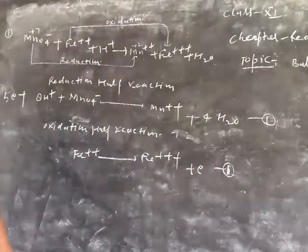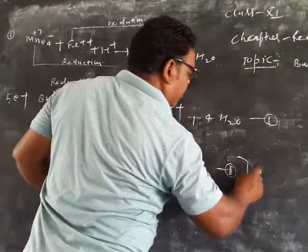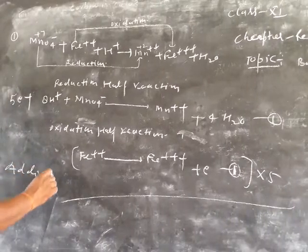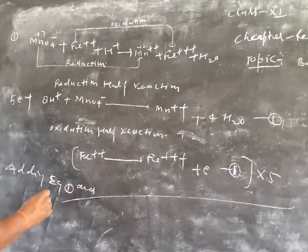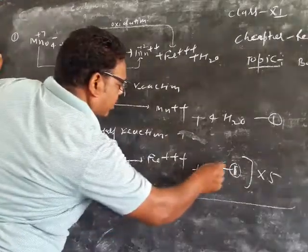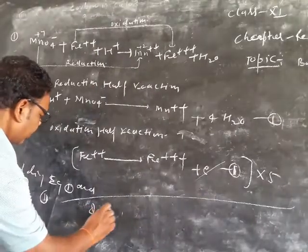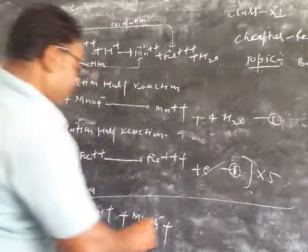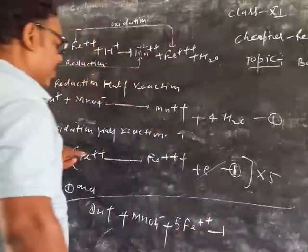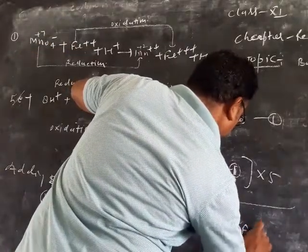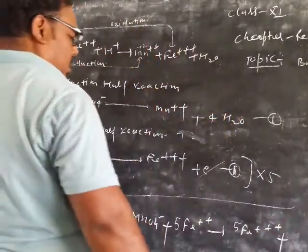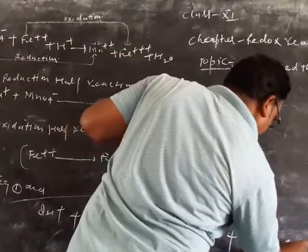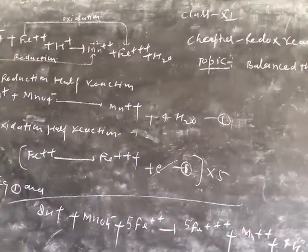Now add the first equation and second equation. Multiply to make electrons equal - 5 electrons. 8H+ plus MnO4- plus 5Fe2+ gives 5Fe3+ plus Mn2+ plus 4H2O. This is the balanced equation.